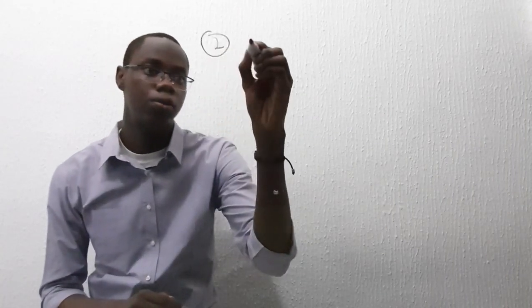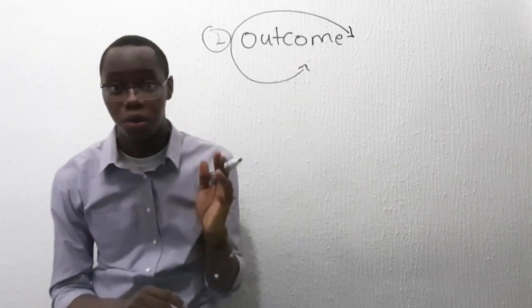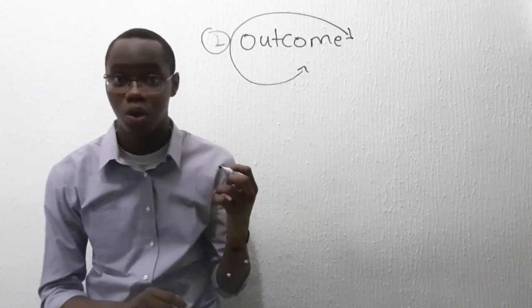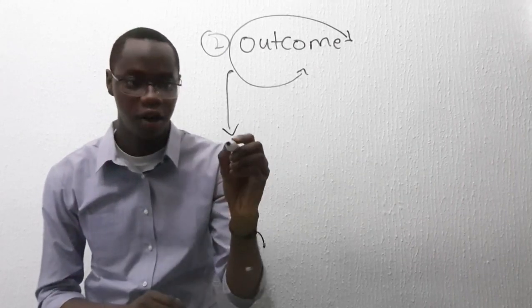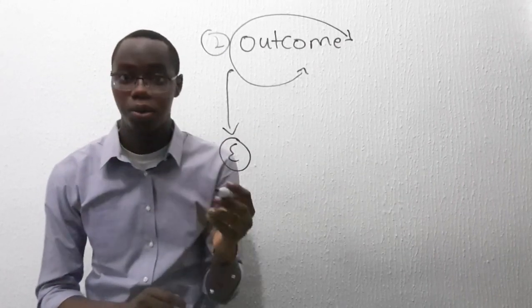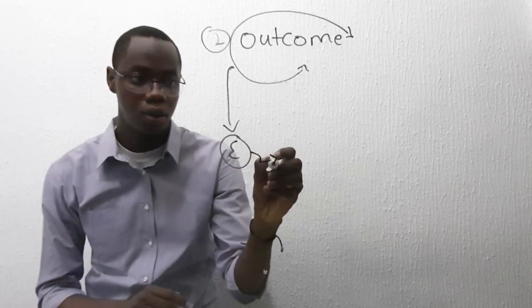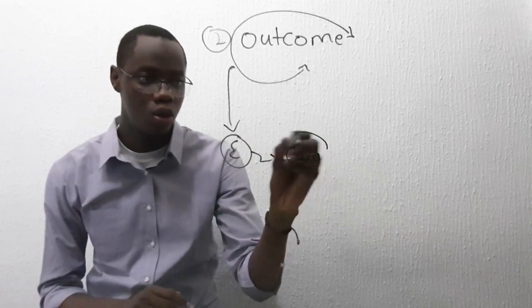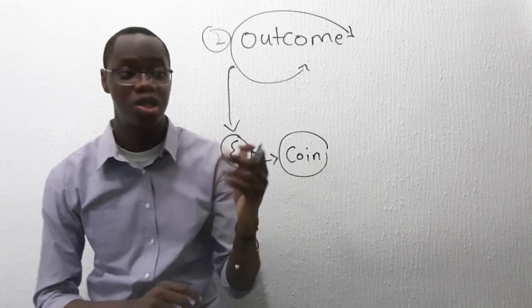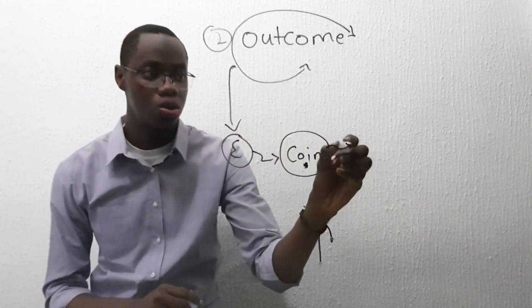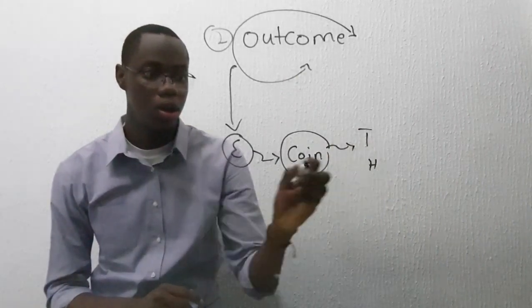So the next term is outcome. What are outcomes? Outcomes in probability are the expected result of an experiment. So if I have an experiment, what do you mean by experiment? It's a test. So after flipping this coin or throwing this die, what do we expect to happen? The expected result of an experiment is an outcome.